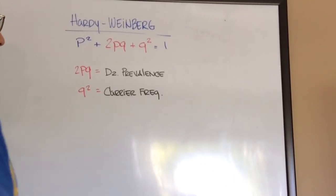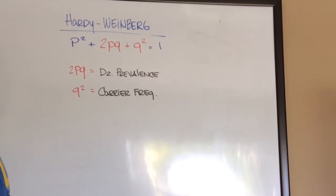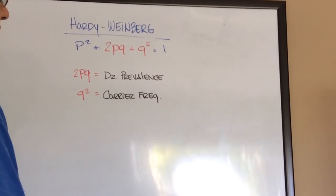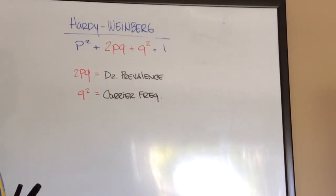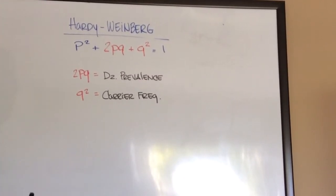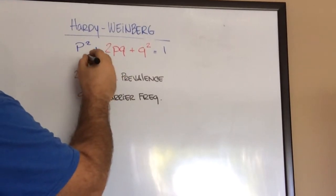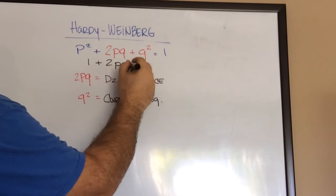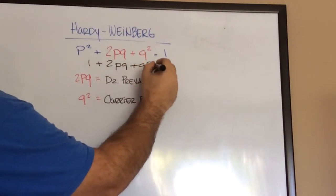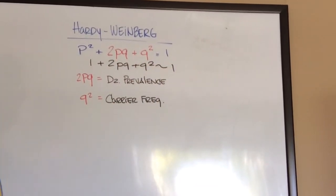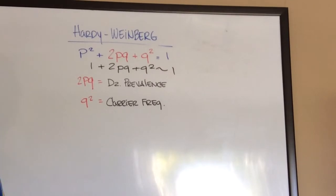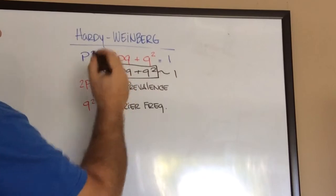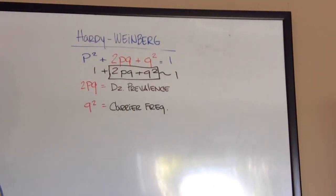So in Hardy-Weinberg Equilibrium, the equation is p² + 2pq + q² = 1. They've oversimplified this so it can read 1 + 2pq + q² is equal to around 1. But what's the common denominator here is 2pq and q². So obviously you need to know these.